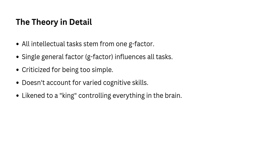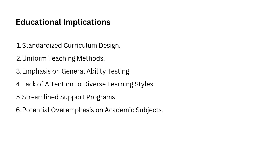Now let us move on to the educational implications of this theory. Point number one: standardized curriculum design. The unitary theory supports the idea of a one-size-fits-all curriculum, where all students are expected to follow the same learning path. Since intelligence is viewed as a single measurable trait, the curriculum is often designed without considering individual differences, promoting uniform content for all learners. Point number two: uniform teaching methods. Educators may adopt a generalized teaching approach using methods believed to enhance intelligence across the board, which could result in an over-reliance on lectures, rote memorization, and repetitive exercises as ways to boost general cognitive functioning.